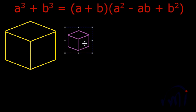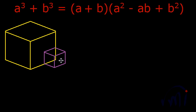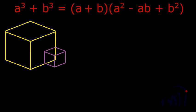We have to do A cube plus B cube, so I am going to add them. This is A cube plus B cube, where the bigger cube has volume A cube because its each side is of dimension A, and the smaller cube has volume B cube because its each side is of dimension B.